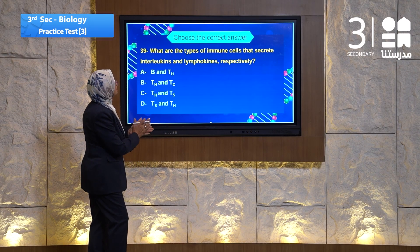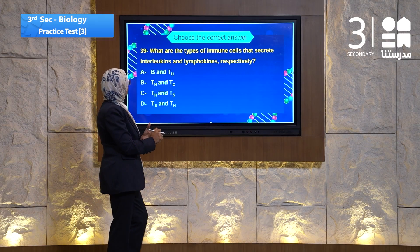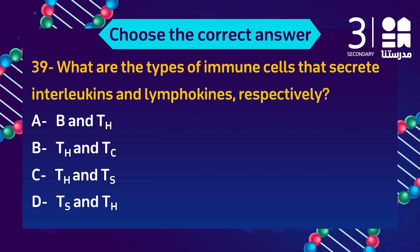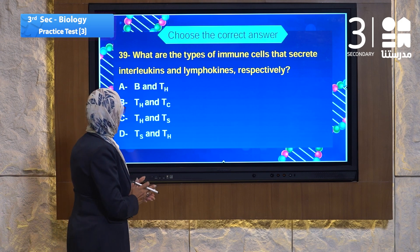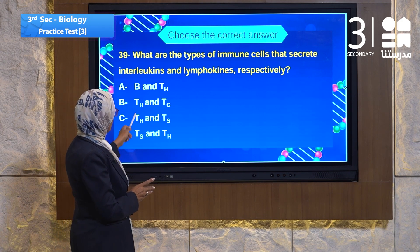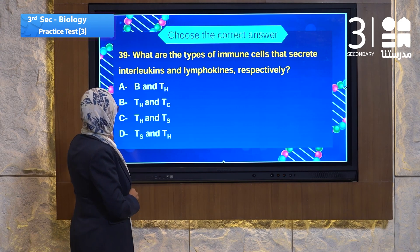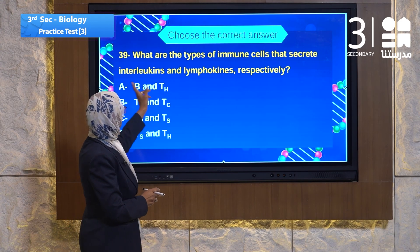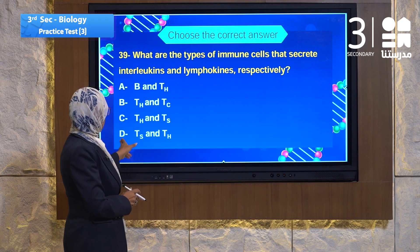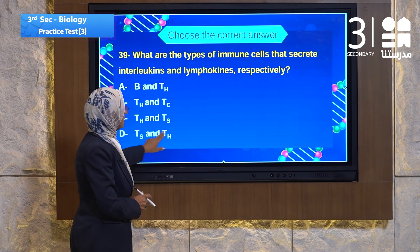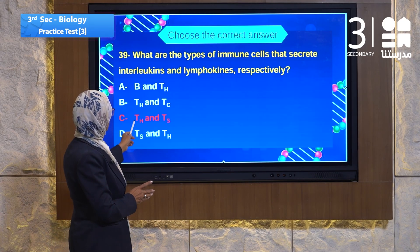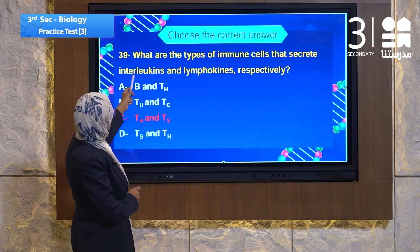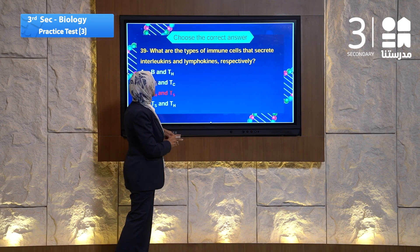Question 39 speaks about the types of immune cells. What are the types of immune cells that secrete interleukins and lymphokines, respectively? The choices are: A, B and TH; B, T helper cell (TH) and TC; C, TH and TC respectively for interleukins and lymphokines; D, TS and TH. The answer must be TH and TS — TH secretes interleukins and TS secretes lymphokines.